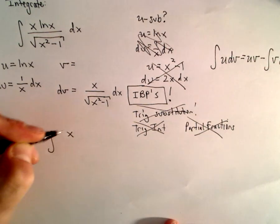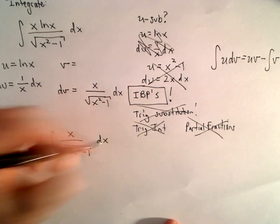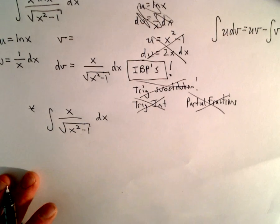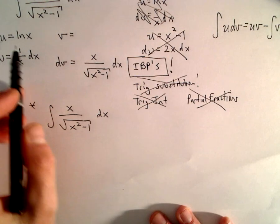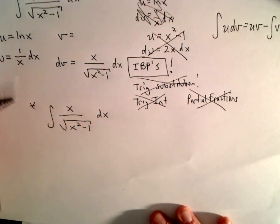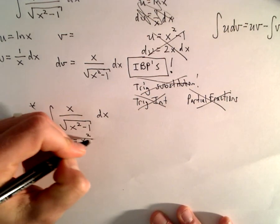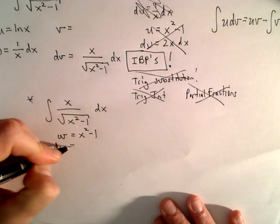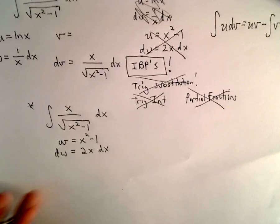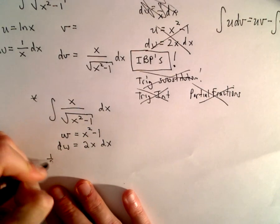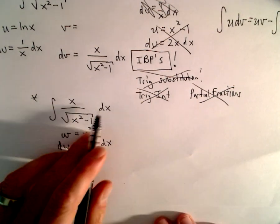Off to the side, we'll find the antiderivative of x divided by √(x²-1). You could do this using a trig substitution, but that would be overkill. I'm going to use a w-substitution — since I've already used u and v labels, I'll use w instead. So let w = x² - 1, then dw = 2x dx. Multiplying both sides by 1/2 gives us (1/2)dw = x dx.